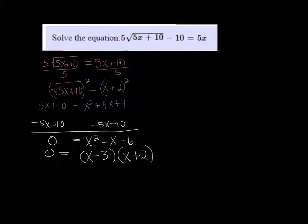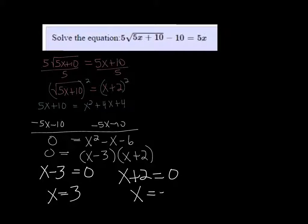So from there we could extract the answers. X minus 3 equals 0, so one answer could be 3, and x plus 2 equals 0, so one answer could be negative 2.